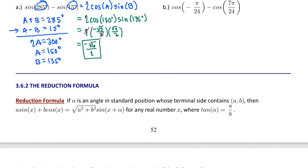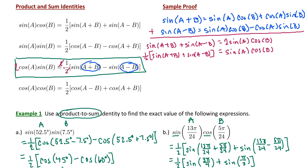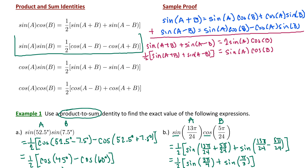Let's try one more sum-to-product identity. Example 2b is cosine of an angle minus cosine of another angle. Before identifying the formula, I'll simplify the negative inside the argument: since cosine is an even function, cosine of negative π over 24 equals cosine of π over 24. We want a sum-to-product identity for the difference between two cosines, which is our second formula. Again, since there's no one-half in our problem, we multiply both sides by 2, so the difference in cosines equals twice the product of sine of a and sine of b.